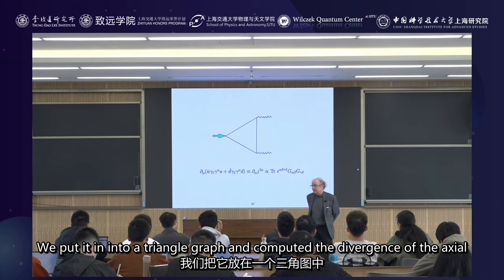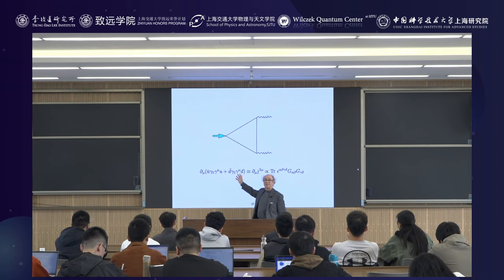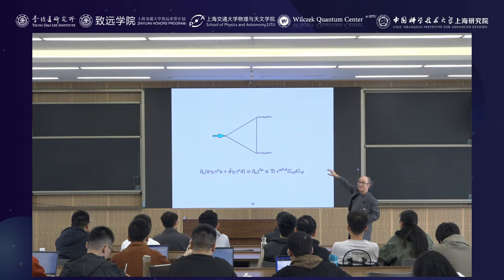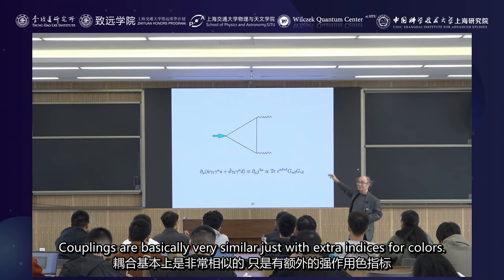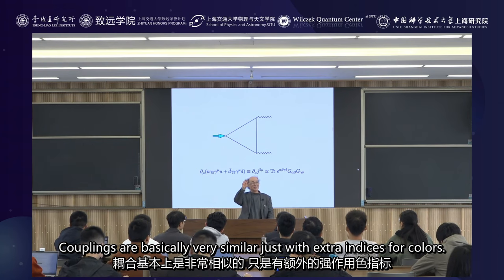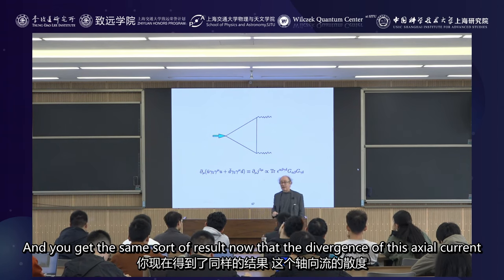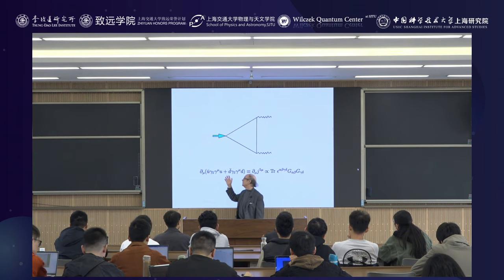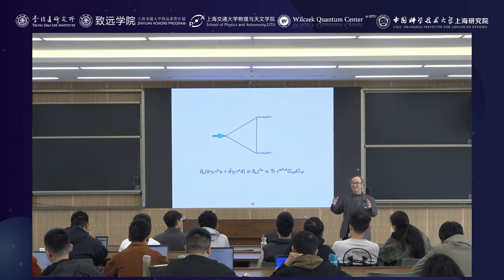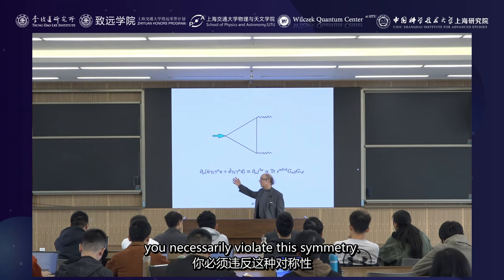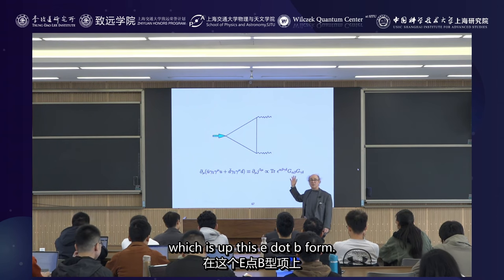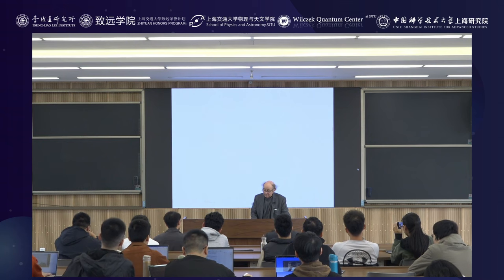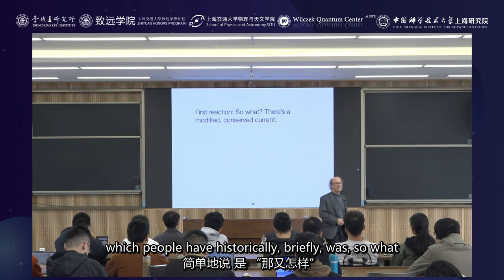We saw that you could nail down an important form of such symmetry breaking through quantization by considering triangle graphs. We put a massless fermion into a triangle graph and computed the divergence of the axial current. In our original case we looked at the vertex where it goes into two photons, but we can also do the same thing with two gluons. The couplings are very similar, just with extra indices for colors, and you get the same sort of result: the divergence of this axial current, which classically is zero, now has a right-hand side of the E-dot-B form.